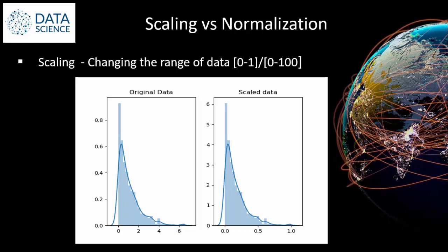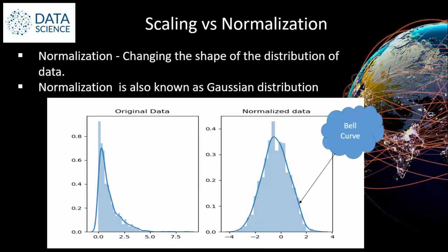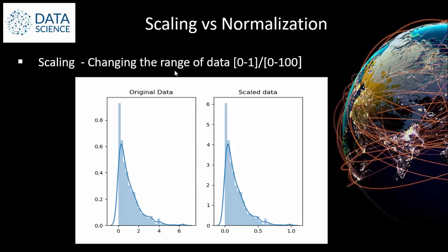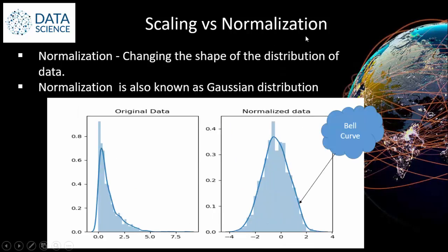This can be done using Python libraries, so you don't need to worry about that. Once we complete scaling, the next step is normalization. Normalization means changing the shape of the distribution of data, whereas scaling means changing the range of the data. This is a very famous interview question: what is the difference between scaling and normalization?